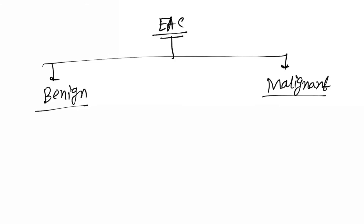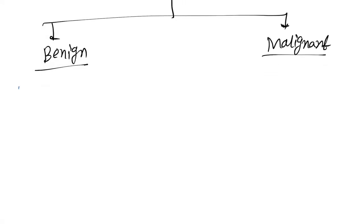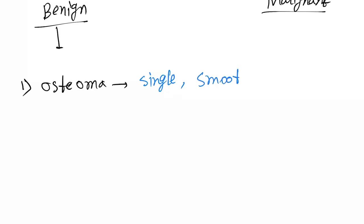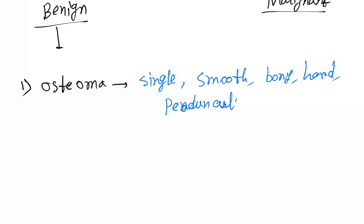Starting with benign tumors of the external auditory canal, the first is osteoma. Its features are that it is a single, smooth, bony-hard, pedunculated tumor.